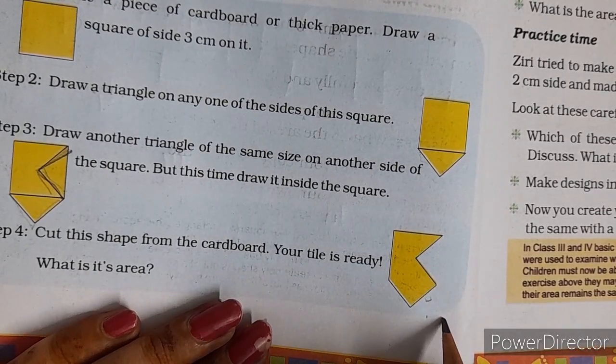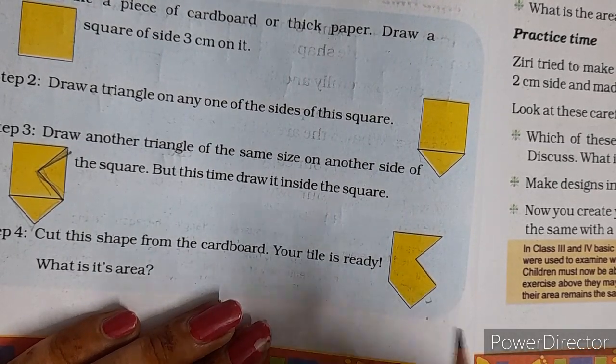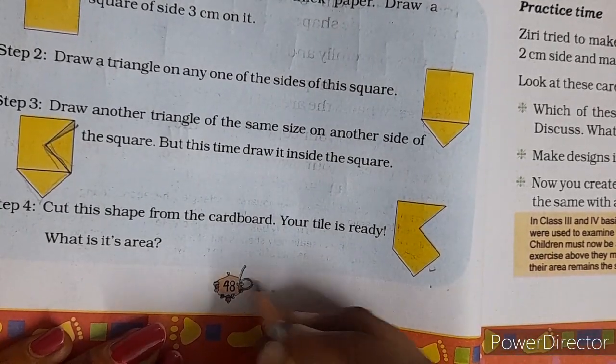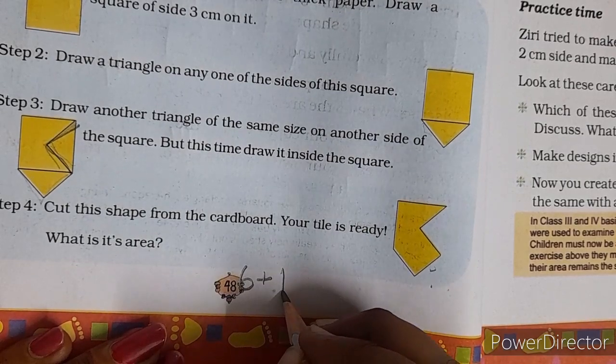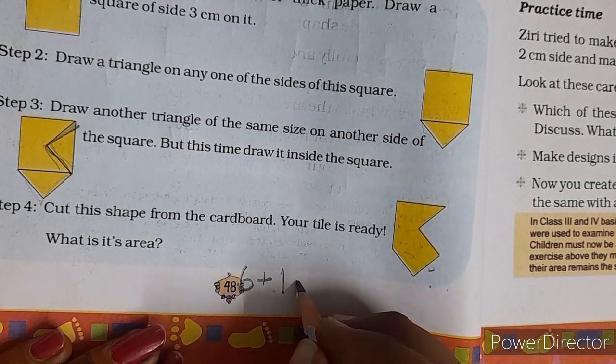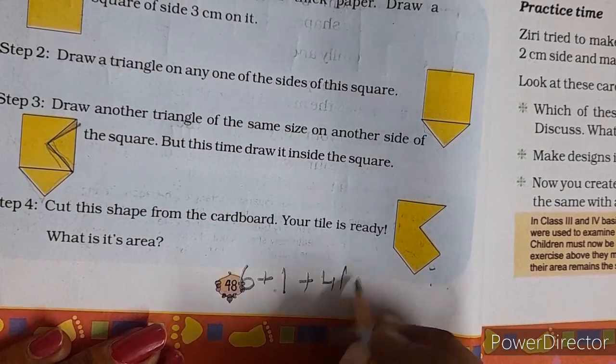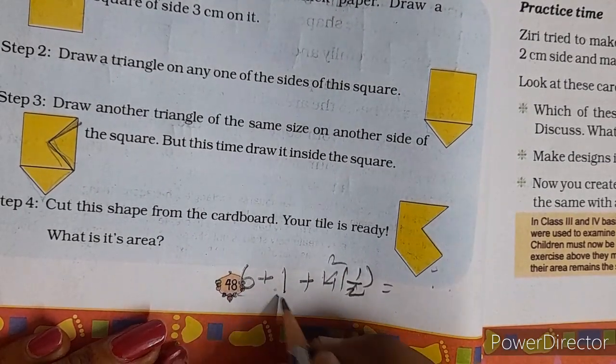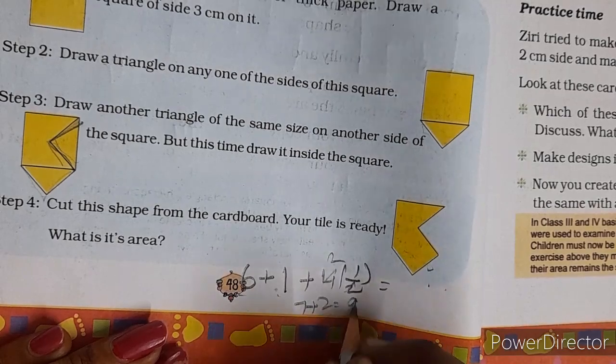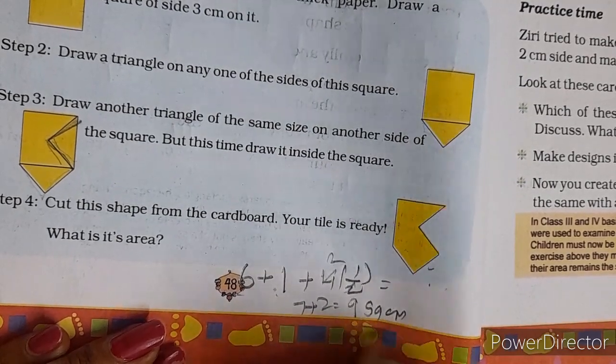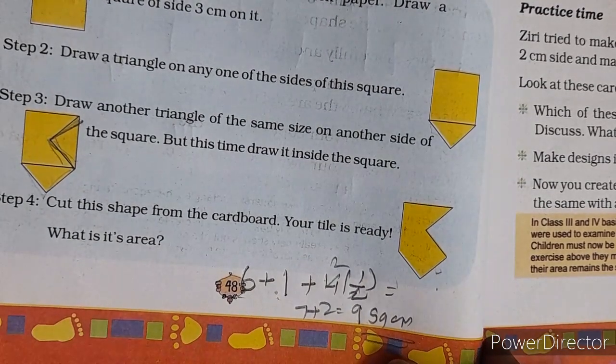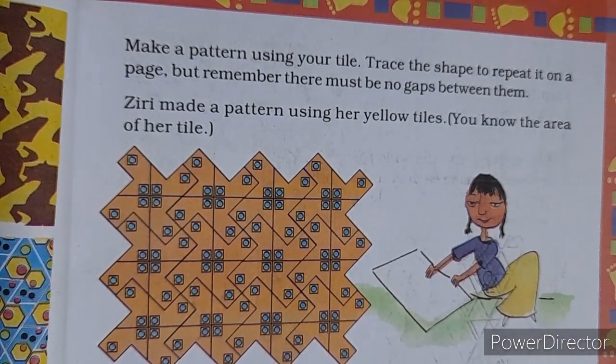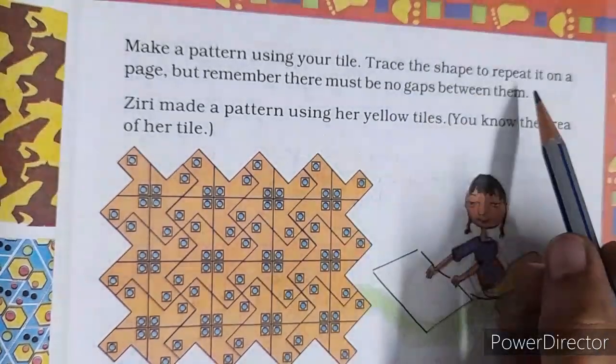So you see, this type of design will be made. Your design is ready. Now what will be the area? For area, complete squares are there. If you put it on square grid, six complete squares will come, one more than half will come, and four half quarters will come, which is two twos. Six plus one, seven, seven plus two, nine square centimeter will be your draw.